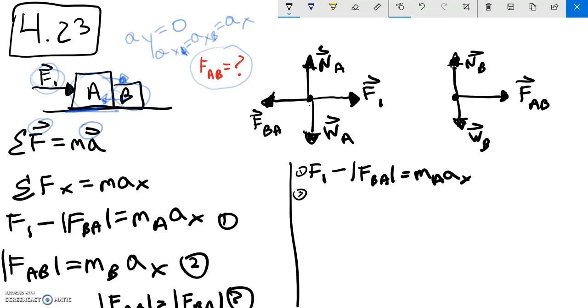So to solve, I said F1 minus F_BA is equal to m_A times a_x. This is rewriting equation one.